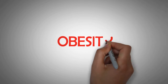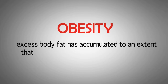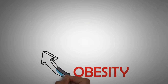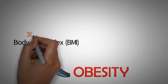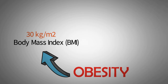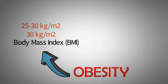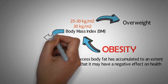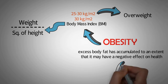Obesity is a medical condition in which excess body fat has accumulated to an extent that it may have a negative effect on health. Obesity is defined as having a body mass index (BMI) of 30 kilograms per meter square or more. The range 25 to 30 kilograms per meter square is defined as overweight. A body mass index is a measurement obtained by dividing a person's weight by the square of the person's height.